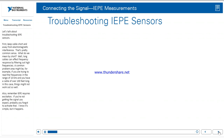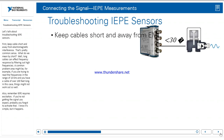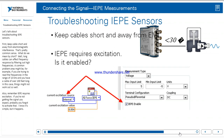Let's talk about troubleshooting IEPE sensors. First, keep cables short and away from electromagnetic interference. Long cables can affect frequency response by filtering out high frequencies — so if you're trying to read frequencies in the range of 10 kHz and you have a cable of over 100 feet, things might not work out well. Also remember, IEPE requires excitation. If you're not getting the signal you expect, you probably forgot to activate that — it's simple, but it happens.